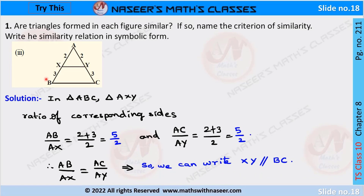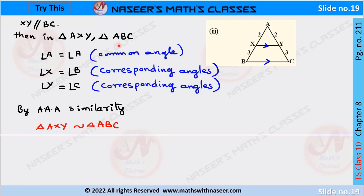We check whether the given triangles are similar or not. We check the ratio of the corresponding sides of triangle ABC and triangle AXY. Corresponding sides ratio AB by AX equals 2 plus 3 by 2, which is 5 by 2. Other corresponding side ratio AC by AY equals 2 plus 3 by 2, which is also 5 by 2. Corresponding sides ratios are equal, so XY is parallel to BC. Angle A is common, angle X equals angle B and angle Y equals angle C — corresponding angles. By AAA similarity, triangle ABC is similar to triangle AXY.